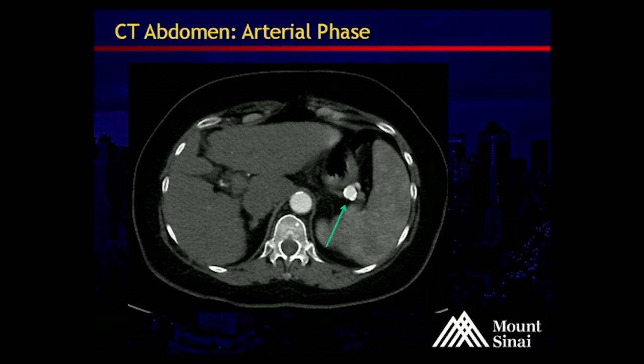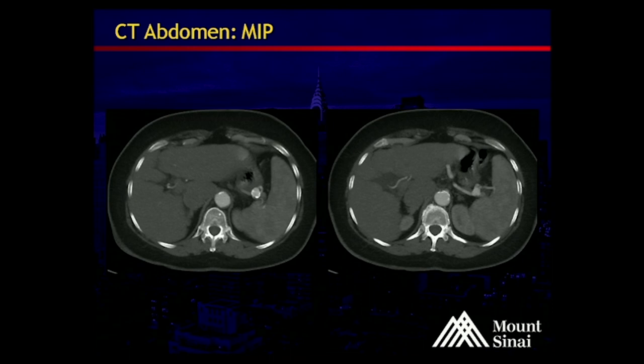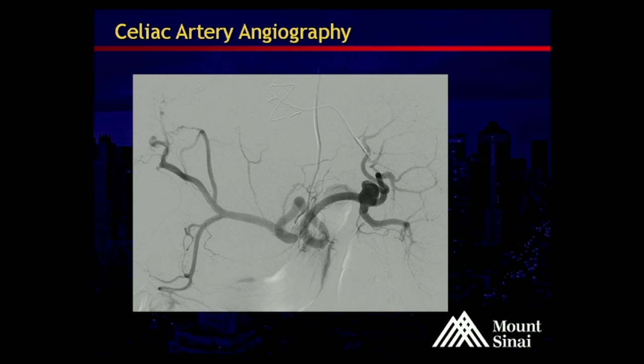This CT image demonstrates the splenic aneurysm, which is partially calcified and quite sizable compared to her aorta. A MIP reconstruction from that CT data shows the splenic aneurysm is actually at the hilum with multiple vessels originating from the aneurysm itself. This angiogram from one of the chemoembolizations also nicely demonstrates the aneurysm at the hilum with multiple vessels originating from it.